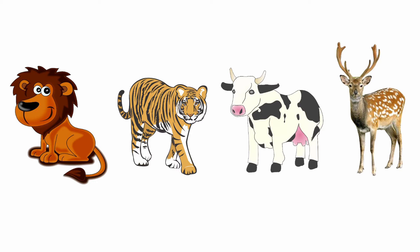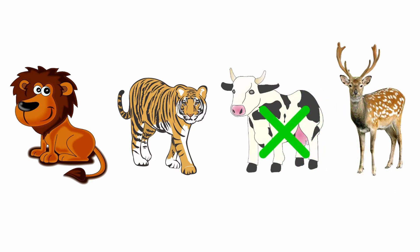First, lion, tiger, cow and deer. Among these four pictures, we know lion, tiger and deer are wild animals. But cow is a domestic animal. So, we are going to cross out cow.